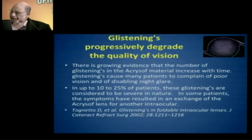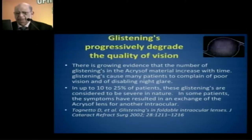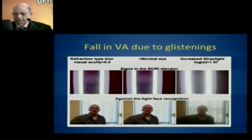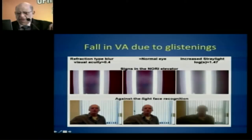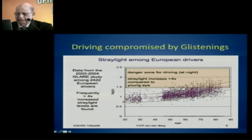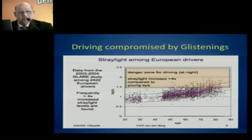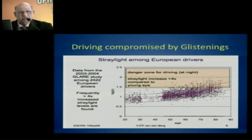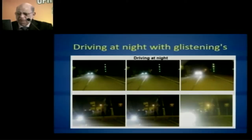Glistening progressively decreases the quality of vision. There is growing evidence that as glistenings increase, patients complain of poor vision and disabling night glare, which tends to be severe in some patients. Against light, face recognition progressively drops and driving is compromised. Among European drivers, data showed progressive difficulty in driving at night, especially in places like Germany where night driving is routine. Glistenings cause a progressive fall in both contrast and clarity.